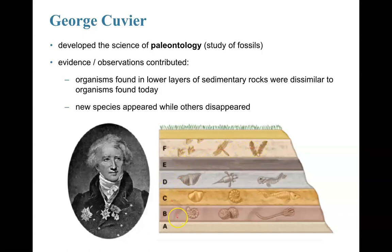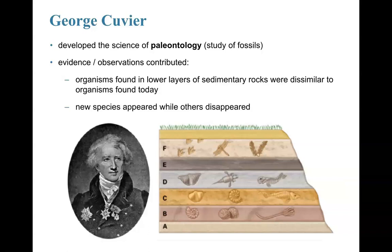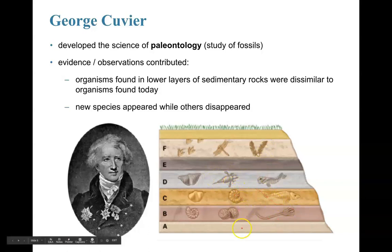Another contribution from George Cuvier was the discovery that new species appeared while others disappeared. Looking at all these different fossils, you can see a shell-like organism in layer B still appearing in layer C many years later. But another organism with a long tail-like form and appendages doesn't appear in any other layer. So Cuvier gave us the concept that new species appeared along the timeline while others went extinct.